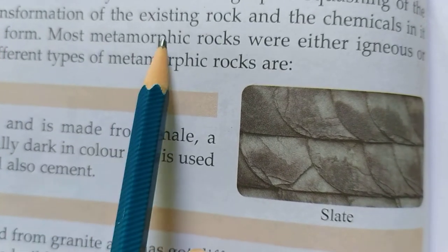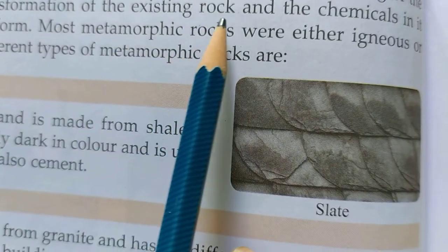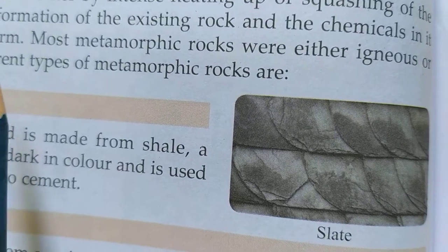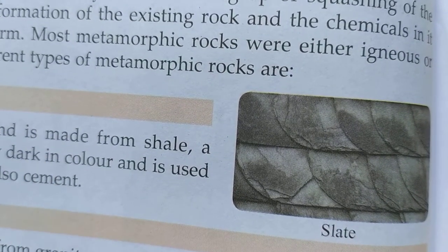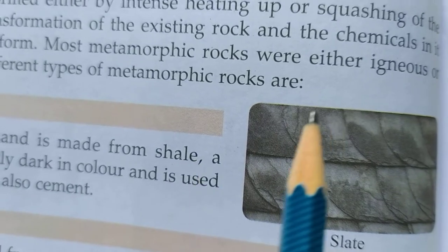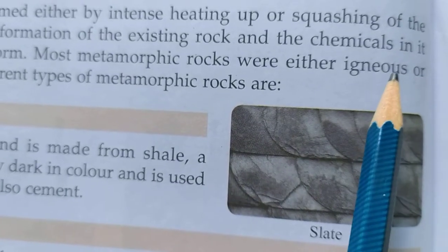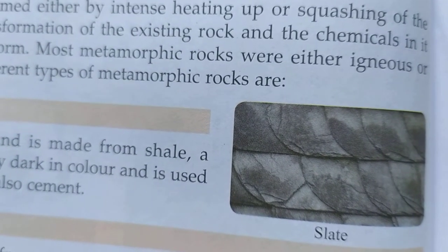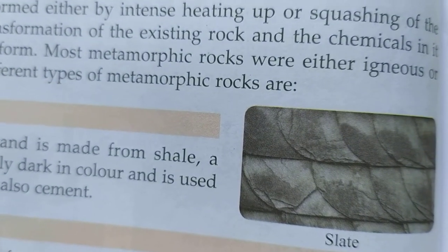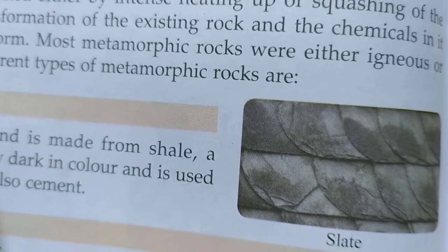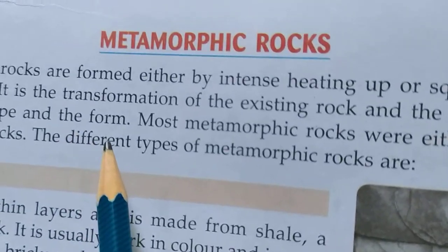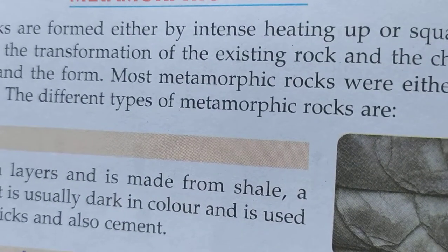It is the transformation of the existing rock and the chemicals in it. The chemical change affects the form and shape of the rock. Metamorphic rocks are made by heating.